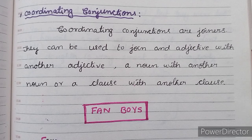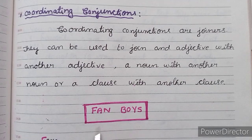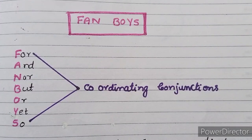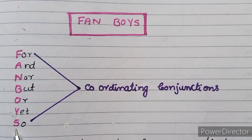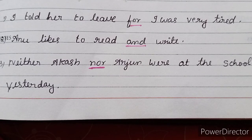The main seven coordinating conjunctions are: for, and, nor, but, or, yet, and so. The best way to remember the seven coordinating conjunctions is by using the acronym FANBOYS: F stands for 'for,' A stands for 'and,' N stands for 'nor,' B stands for 'but,' O stands for 'or,' Y stands for 'yet,' and S stands for 'so.'